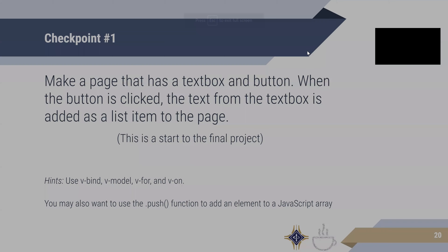Now I want you to do a little exercise using V-For and the stuff we learned last time. Make a page that has a text box and a button. When the button is clicked, the text you put in the text box is added as a list item printed on the page — similar to what you'll be doing in the final project. A hint: you'll want to use the push function to add elements to the JavaScript array. Give yourself 10-15 minutes and see how it goes.